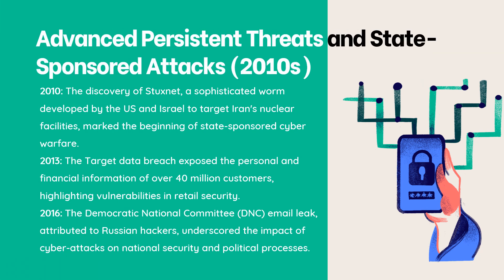Advanced Persistent Threats and state-sponsored attacks emerged in the 2010s. In 2010, the discovery of Stuxnet, a sophisticated worm developed by the U.S. and Israel to target Iran's nuclear facilities, marked the beginning of state-sponsored cyber warfare. In 2013, the Target data breach exposed the personal and financial information of over 40 million customers, highlighting vulnerabilities in retail security.